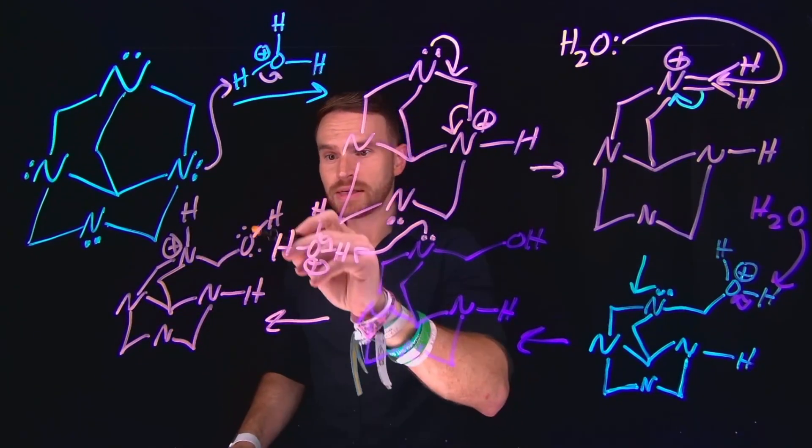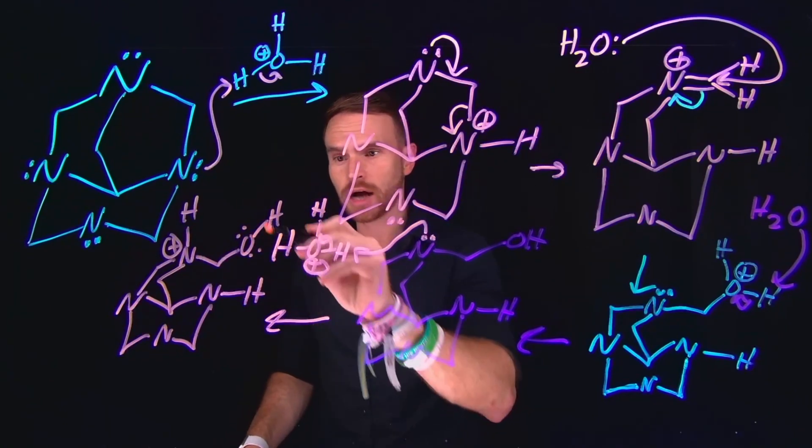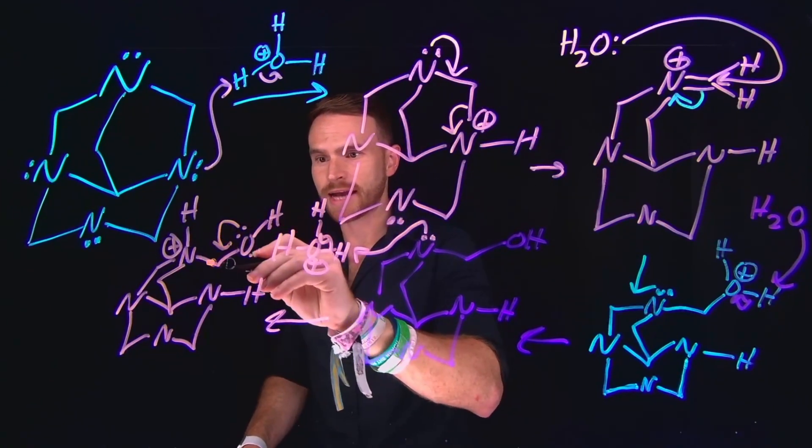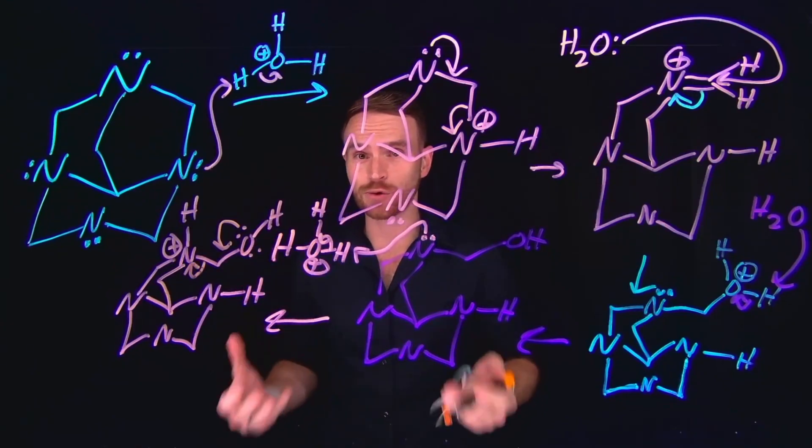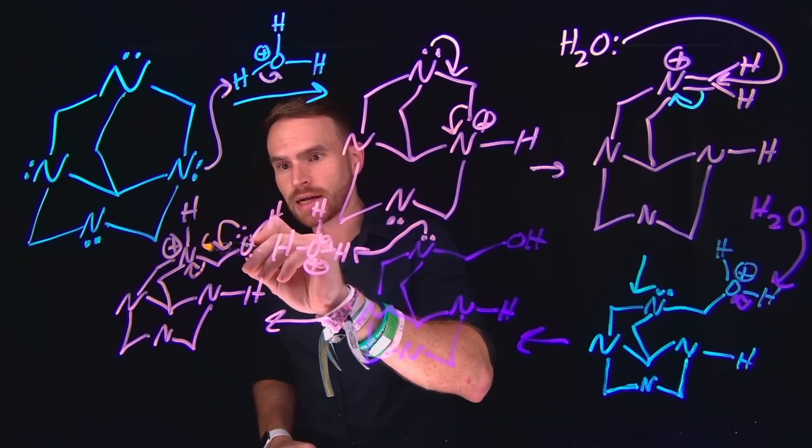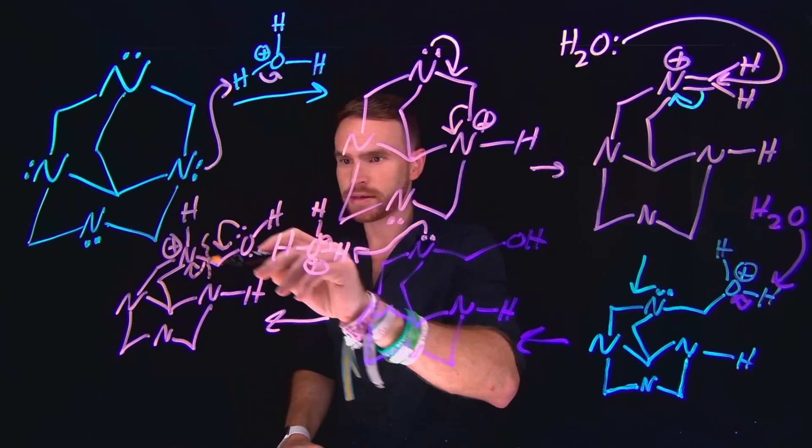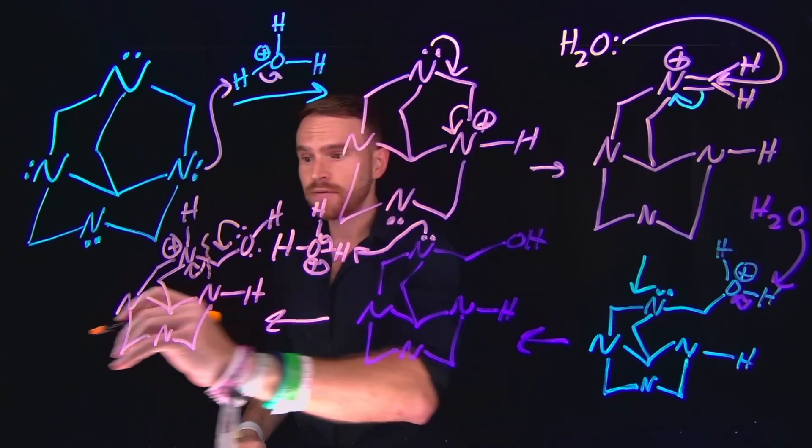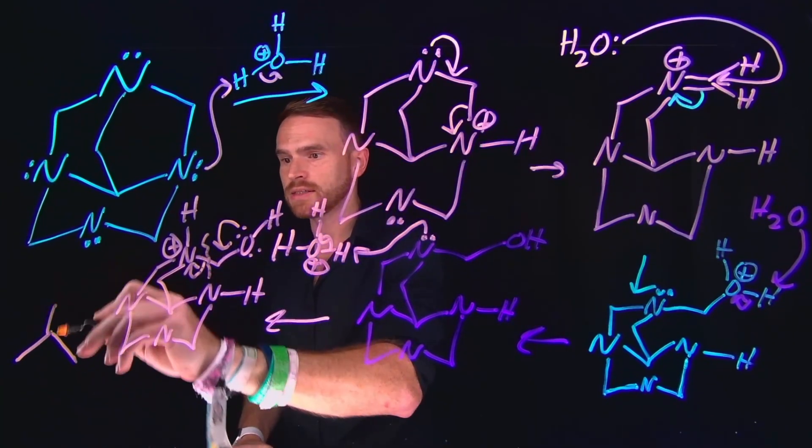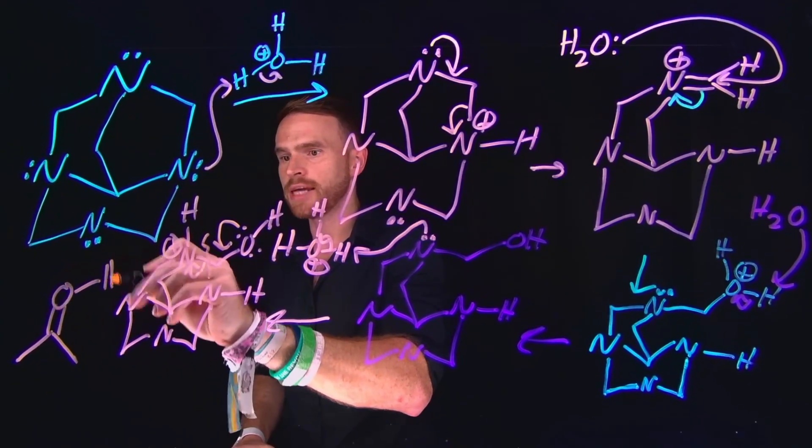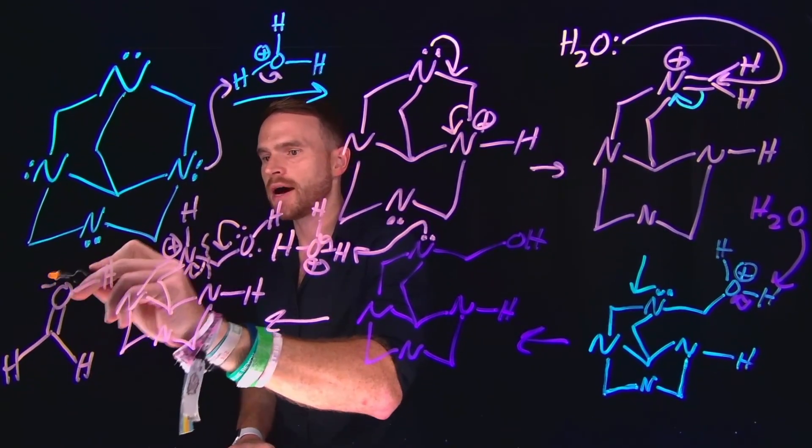However, remember these electrons in this lone pair on the oxygen can come down and actually kick off these electrons back to nitrogen to make it neutral. And notice that it is effectively cleaving this new carbon-nitrogen bond to actually leave us behind with the species that eventually, after deprotonation, is what becomes our formaldehyde.